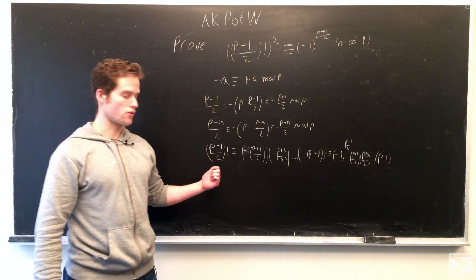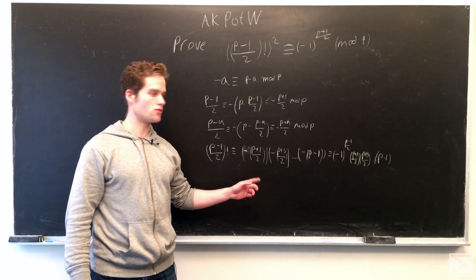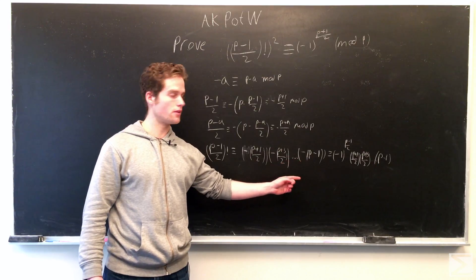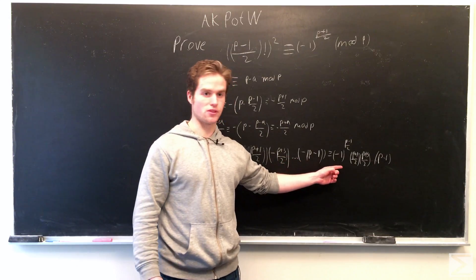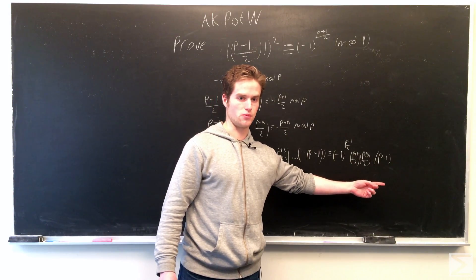So (p-1)/2 factorial is congruent to -(p+1)/2, -(p+2)/2, -(p+3)/2, all the way to -(p-1)/2, which is just (-1)^((p-1)/2) times (p+1)/2 all the way to p-1.